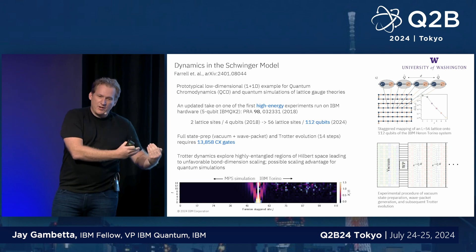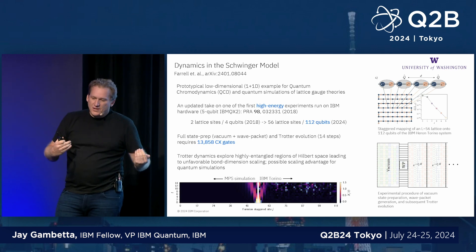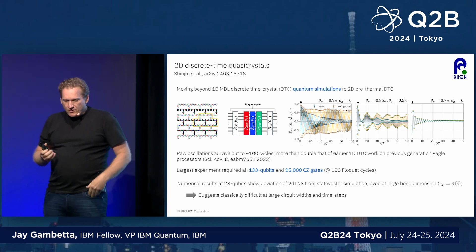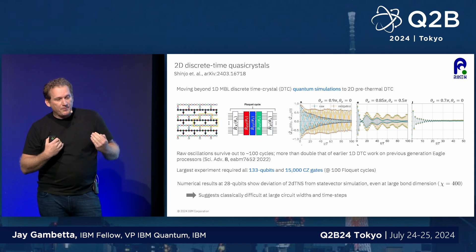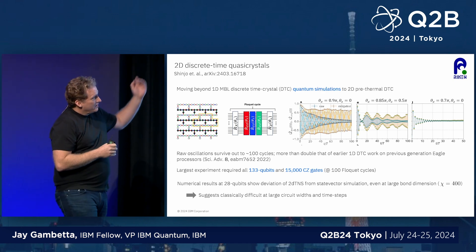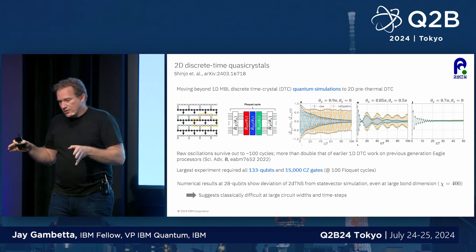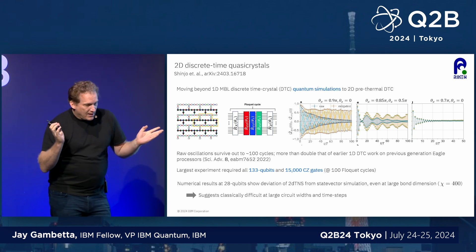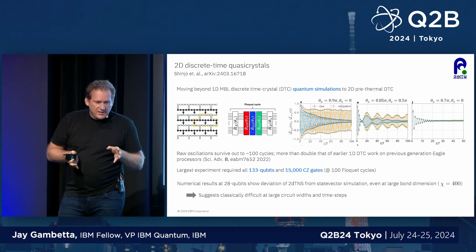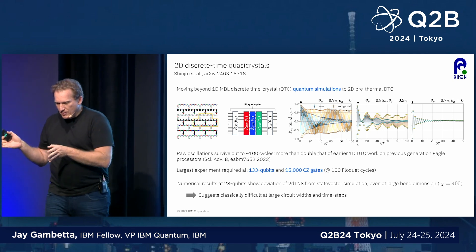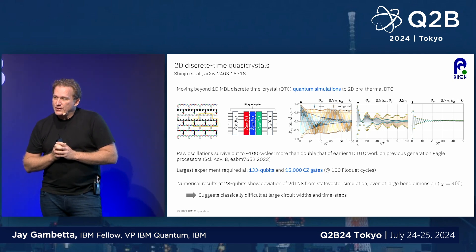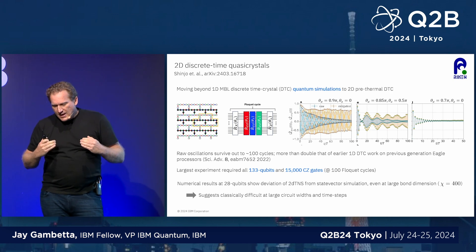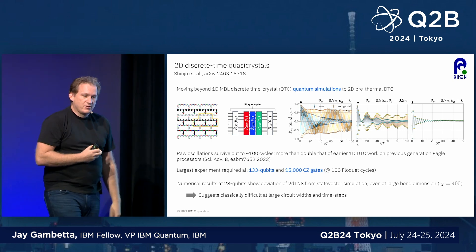To me this is so exciting. It's not yet quantum advantage, but the results are systematically different from matrix product states, and we don't know which one is correct. RIKEN in Japan did a paper looking at a novel transition of non-equilibrium properties. They come up with a way of mapping to a simple circuit, executing and optimizing it. They run it on our latest Heron processor — 133 qubits, around 15,000 gates — and look at regimes where tensor methods start to break down. With their error mitigation and post-processing, their conclusion is that it is actually useful to study these types of properties.